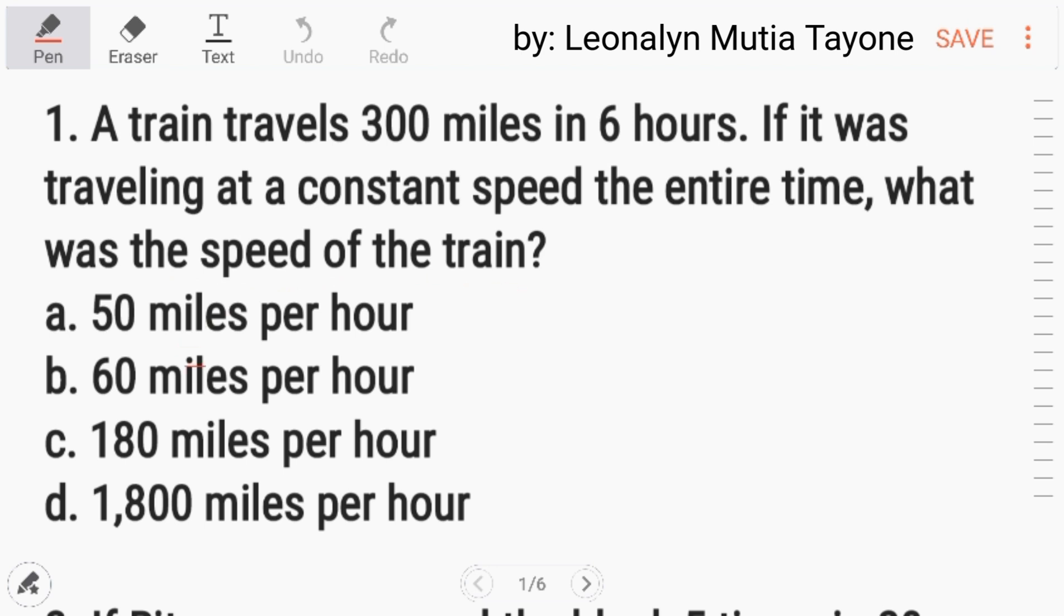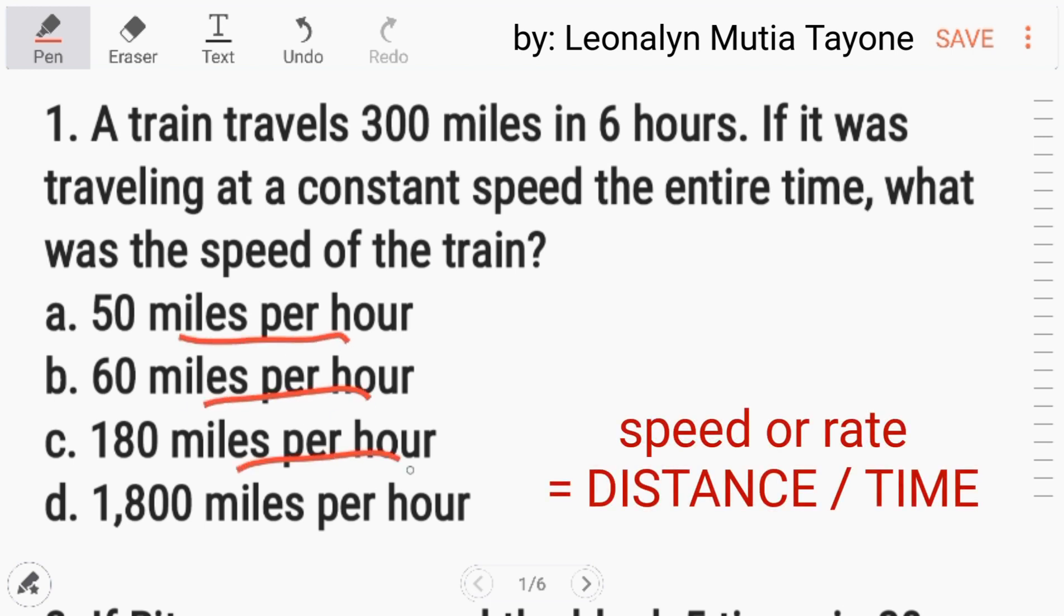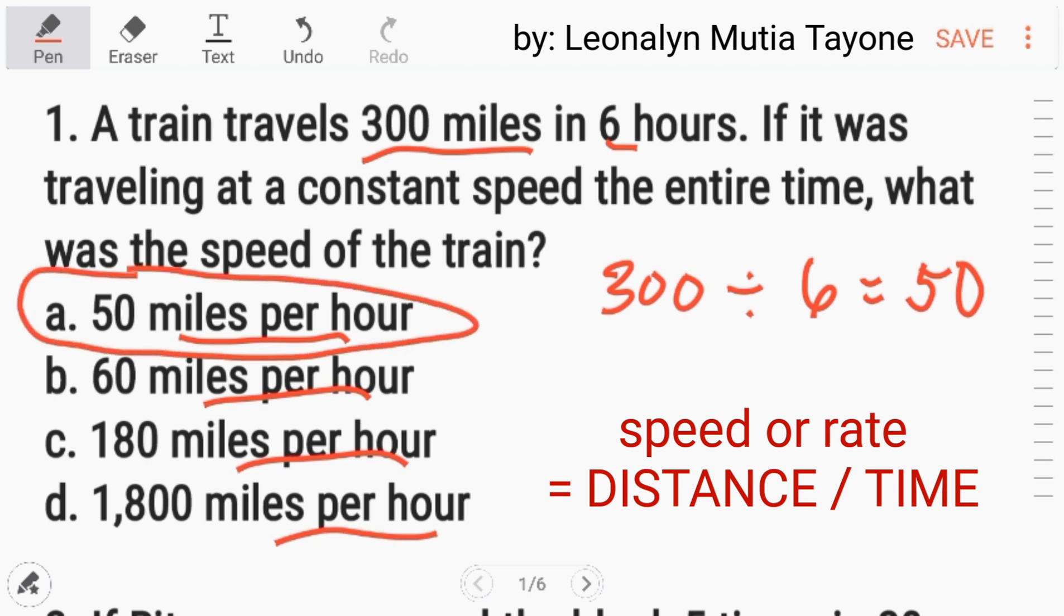Pag sinabing speed, itong nasa choices naman siya, miles per hour. Ang miles niya ay 300 per hour divided by, ang per, ang ibig sabihin niyan ay divided by per hour is 6. So, 300 divided by 6 equals 50. The answer is letter A, 50 miles per hour.